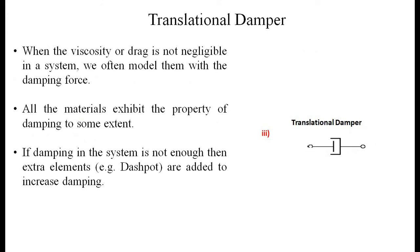The translational damper is used when the velocity or drag is not negligible in a system. All materials exhibit damping to some extent. If damping in the system is insufficient, extra elements called dashpots are added. A pictorial and symbolic representation of a translational damper is shown.